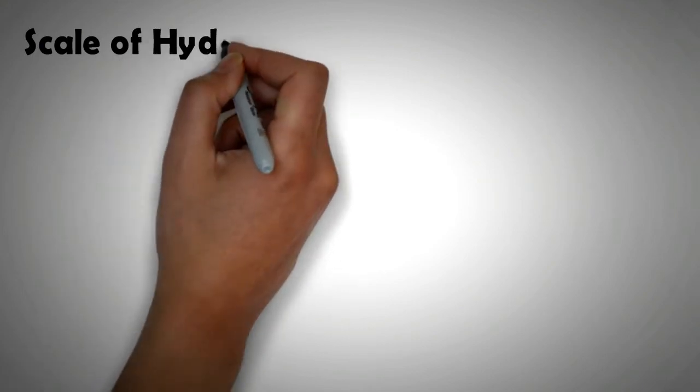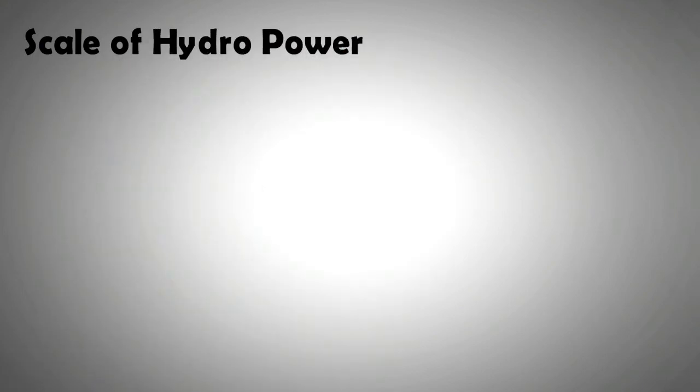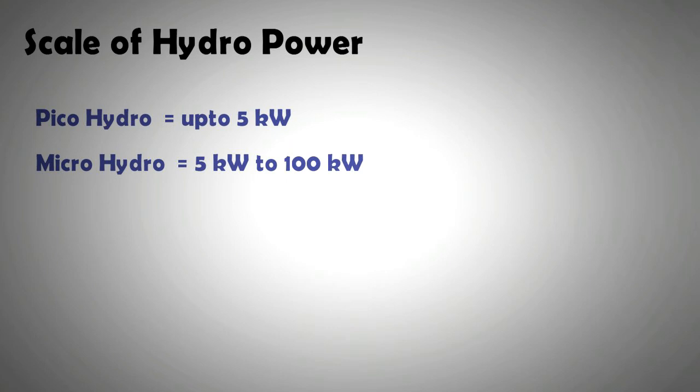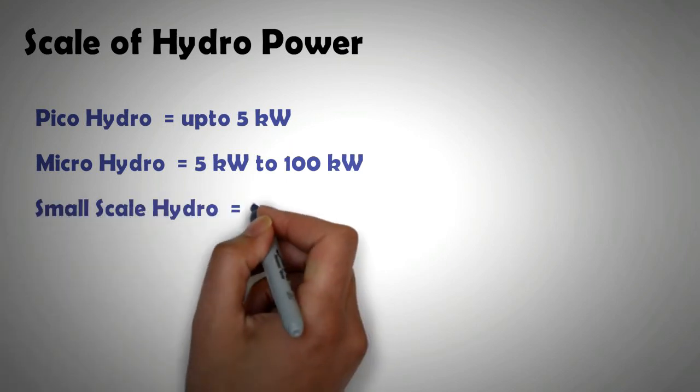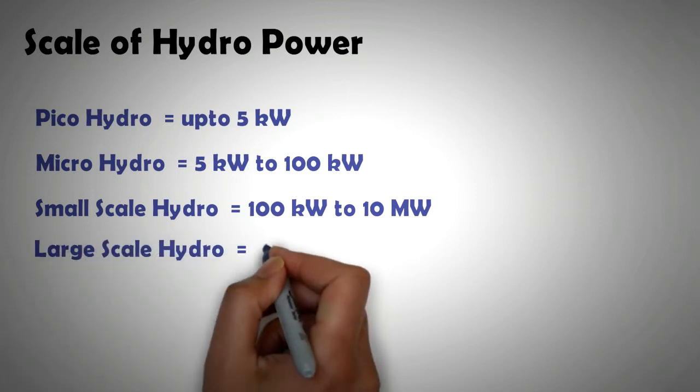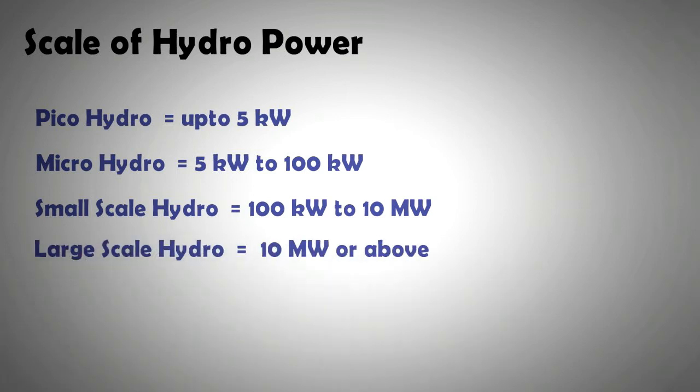The scales of hydropower are as follows. Pico hydro energy comprises of projects which have a capacity of 5 kilowatts or less. Micro hydro means capacities of 5 kilowatts to 100 kilowatts. Small-scale hydro means capacities of 10 megawatts or less. Anything above 10 megawatts is classified as large-scale hydro.